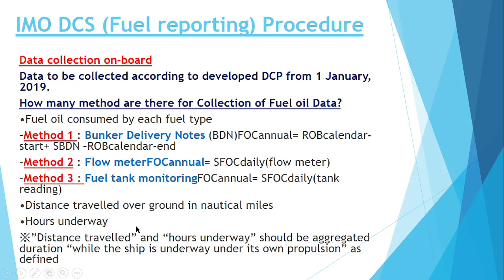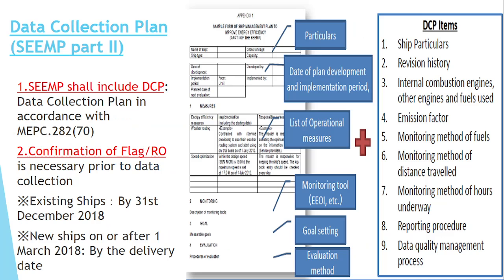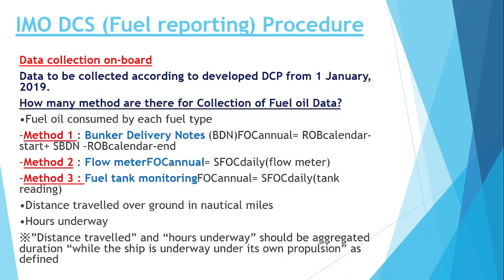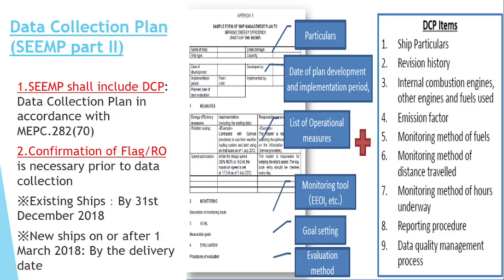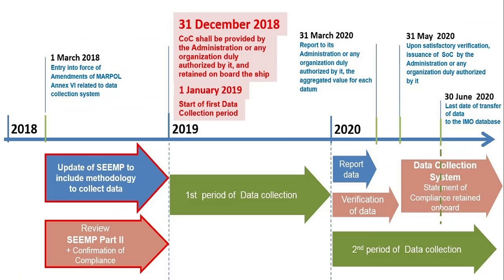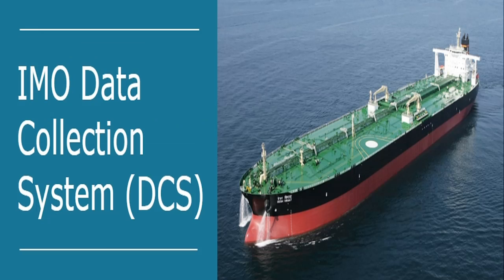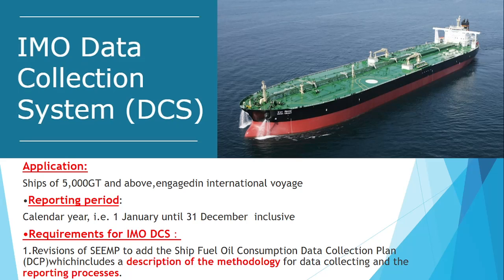Distance traveled in nautical miles and hours underway should be the aggregated duration while the ship is underway under its own propulsion as defined. These are the key things asked in the examination. I hope it is now clear what the different reporting procedures are, what modification was done in the SEEMP, what information is provided in the SEEMP, and how the data is collected as shown in the flowchart. If you gained something from this video, please subscribe and share. Have a good day.